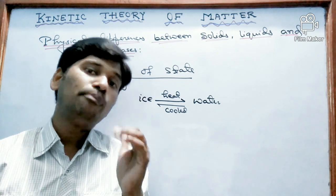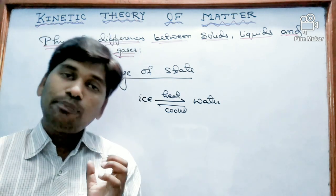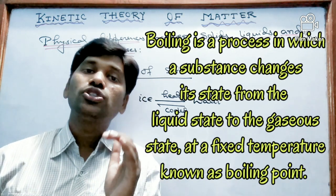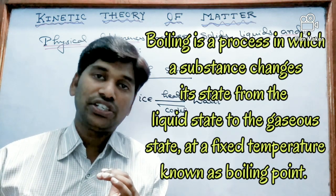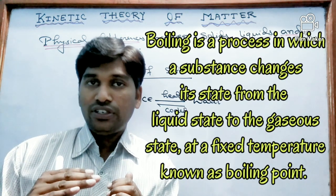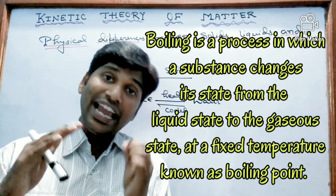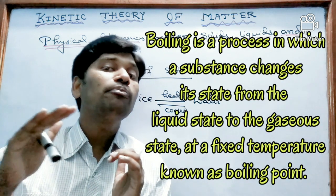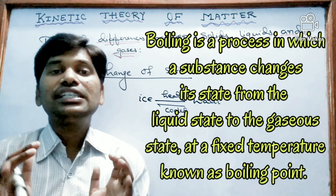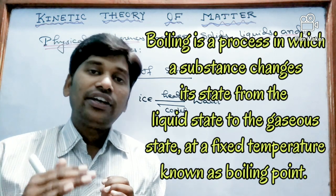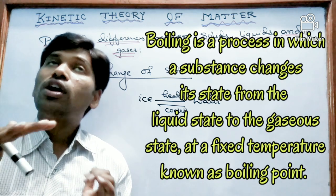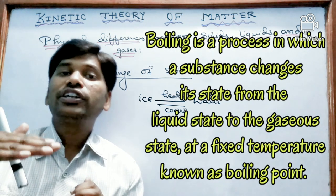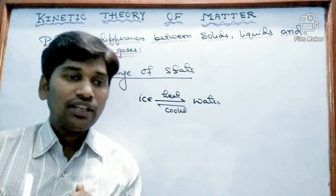The first process I am going to talk about is boiling. Boiling is a process in which a substance changes its liquid state to the gaseous state at a fixed temperature. That fixed temperature is called the boiling point, and this process is called boiling. For example, water boils at 100 degrees Celsius and is converted from liquid to gaseous state.